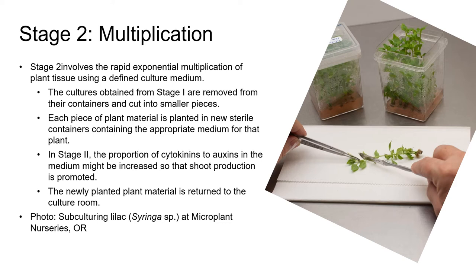Stage two involves the rapid exponential multiplication of plant tissue. The cultures produced in stage one are brought out of the culture room after about two to four weeks, perhaps more depending on the species. By this time they should have grown and, in the case of stem tissue, will have produced small lateral shoots. The plant material is removed from its containers, cut into smaller pieces, replanted on a similar medium in new sterile containers, and put back into the culture room for each piece to put on more growth. In stage two there may be a higher ratio of cytokinins to auxins in order to promote shoot production, as root production isn't needed at this stage.